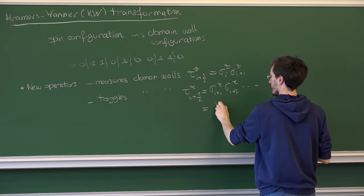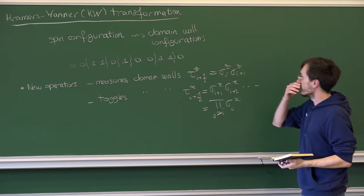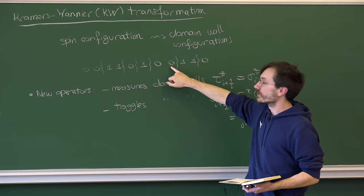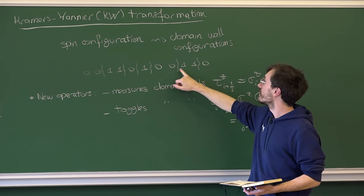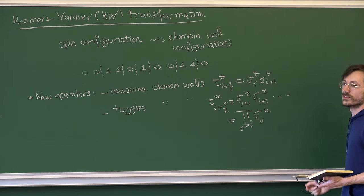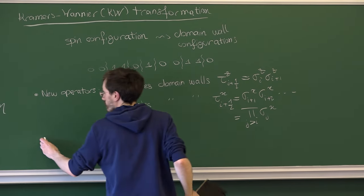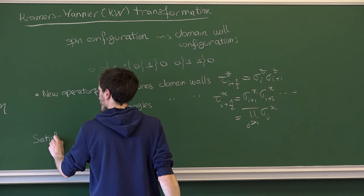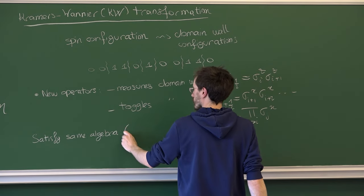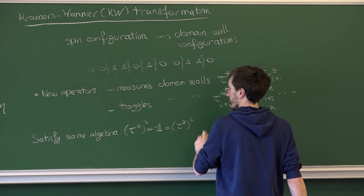I also need an operator that toggles domain walls — either creates or destroys one. This can be expressed as an infinite product of σˣ operators. The idea is: to create a domain wall between two aligned spins you flip one spin, but flipping it creates or destroys domain walls on both sides, so you have to keep going. Since the lattice is infinite, you write it as a semi-infinite product. Crucially, these operators satisfy the same algebra as the original spin operators: they square to the identity and anti-commute.